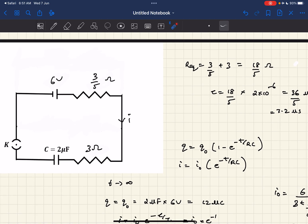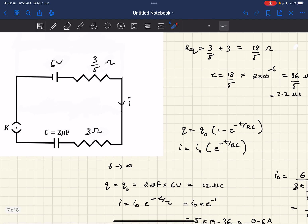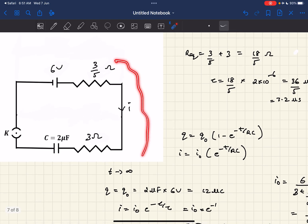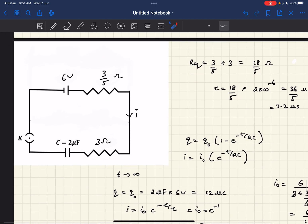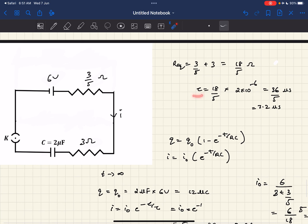In this circuit, we have a charging RC circuit. The R equivalent would be 3 by 5 plus 3 ohm as these two resistors are in series, which comes out to be 18 by 5 ohms. We can find the time constant: tau is simply RC for an RC circuit. If you calculate it, it comes out to be 7.2 microseconds.